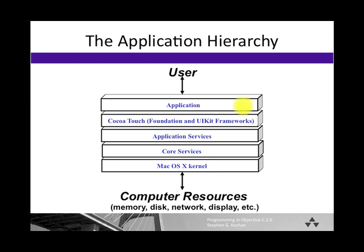Sometimes we skip some of these layers. For example, your application may actually go down and access code that exists in application services or core services, bypassing some of these intermediate layers, typically either for functionality or expediency.